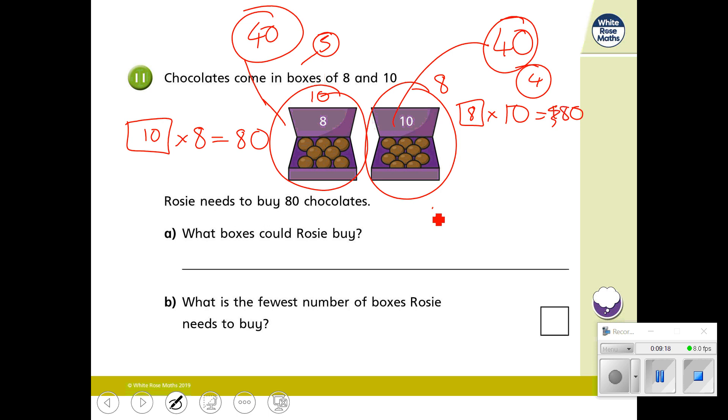OK? So I would have 5 boxes of 8, and I would have 4 boxes of 10, which would make 9 boxes. So it says, what is the fewest number of boxes Rosie needs to buy? And the answer is 8. She can buy 8 boxes of 10 chocolates.